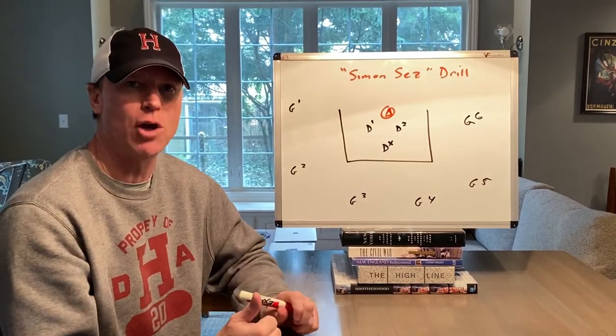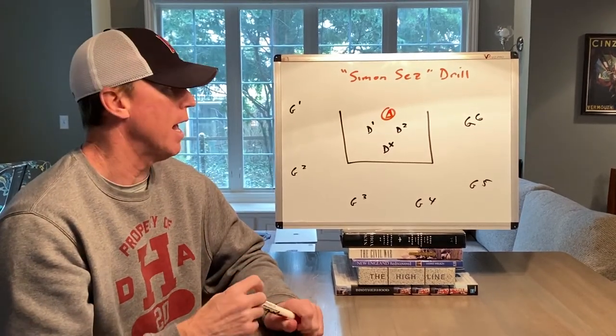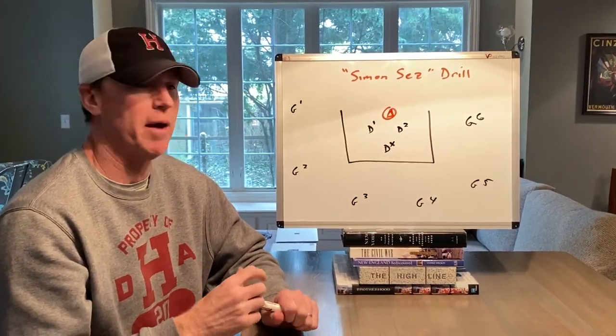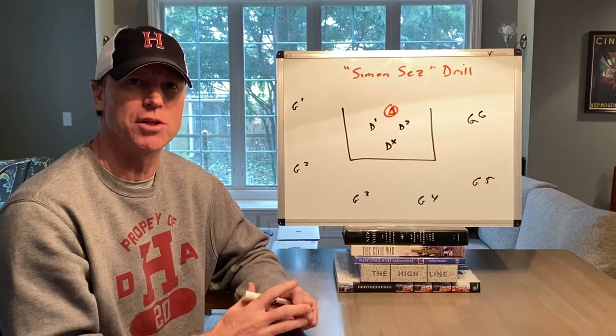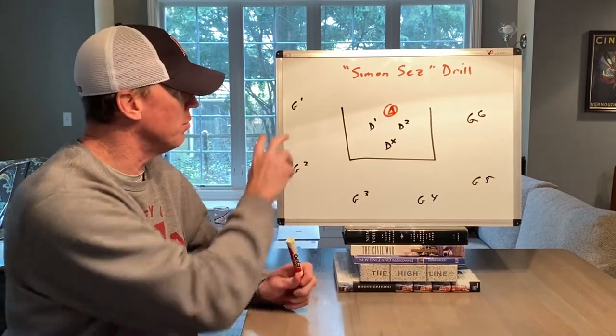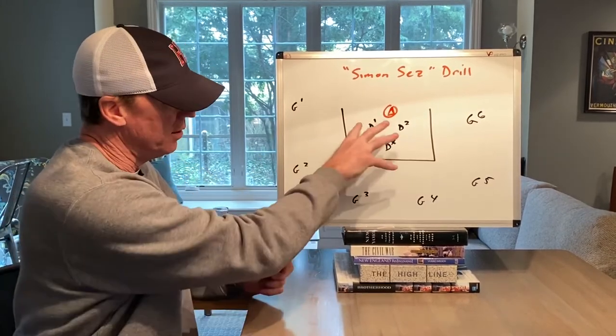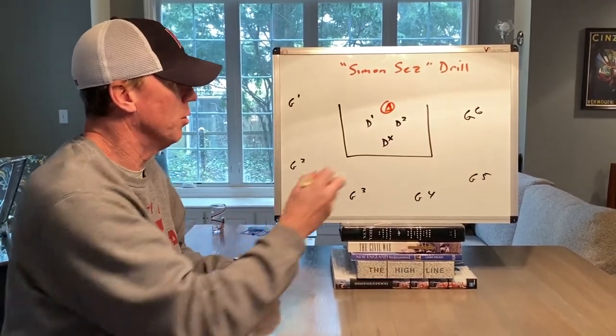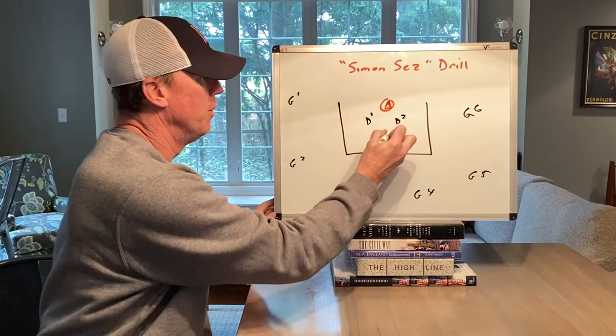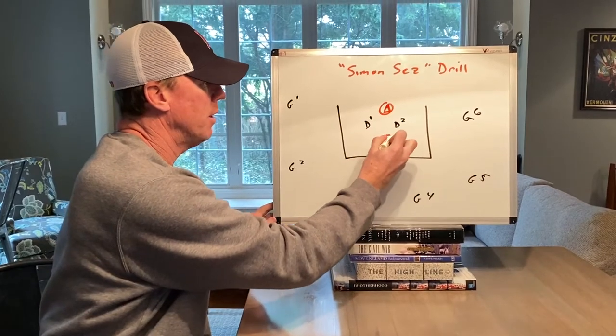they have to imagine that they have a goal, and they also have to imagine that there are offensive players in this drill. Because there are only three people in this iteration, only three people in the group.